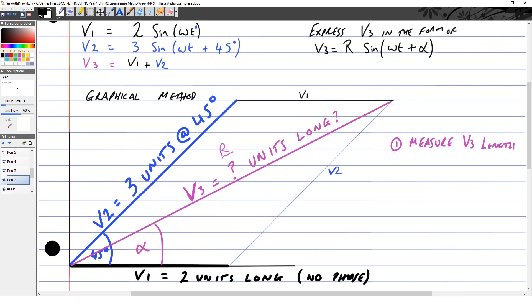We need to measure V3's length, which is R, and we need to measure alpha, which is V3's phase shift.